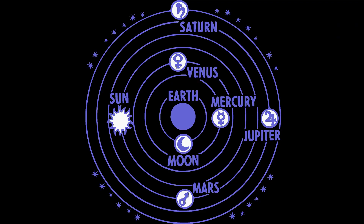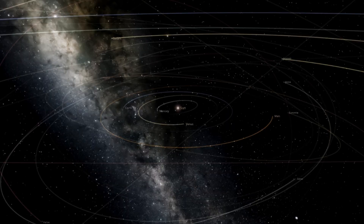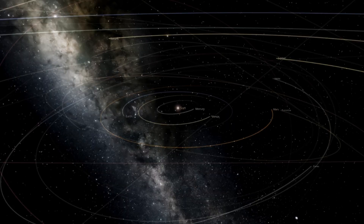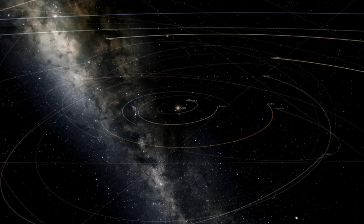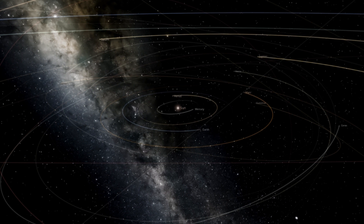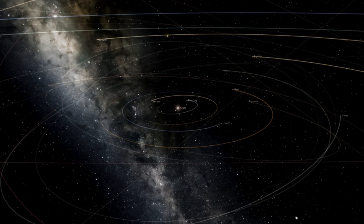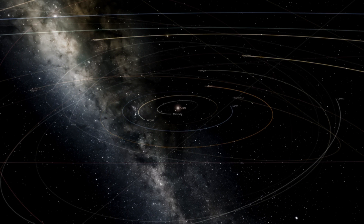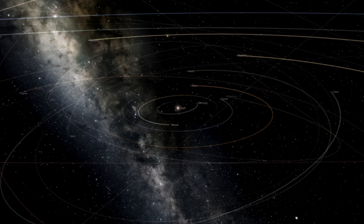Tycho was a firm believer in the notion that the Earth was at the centre of the universe, and was busy trying to update Ptolemy's model of the solar system. Kepler had very different ideas about the structure of the universe, and saw something in the data that Tycho had collected over many years. He was, over a period of many years, without the aid of calculators or log tables, able to construct the Kepler laws of planetary motion.